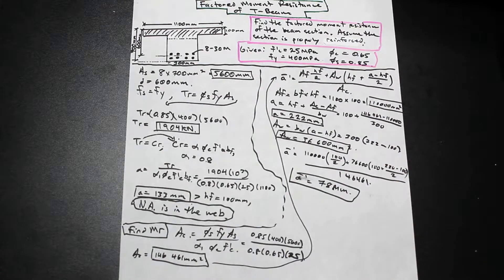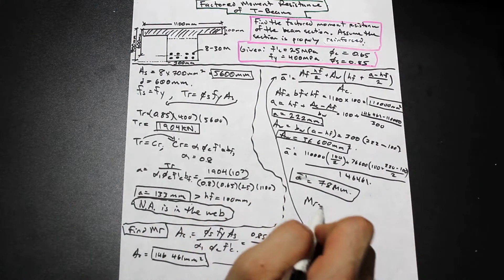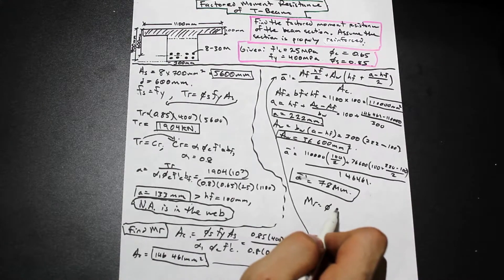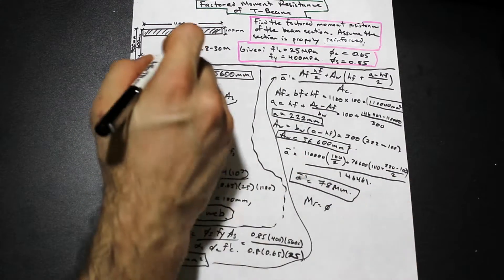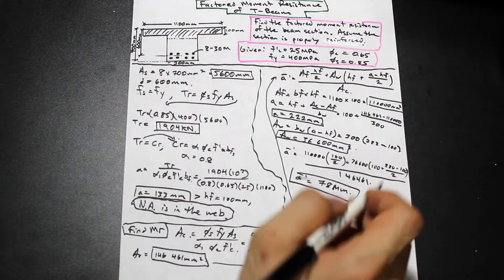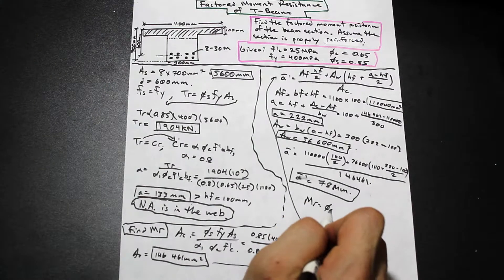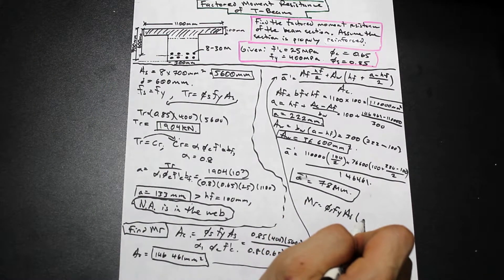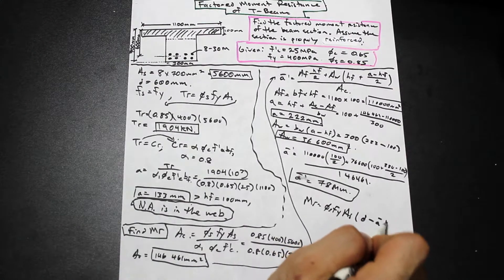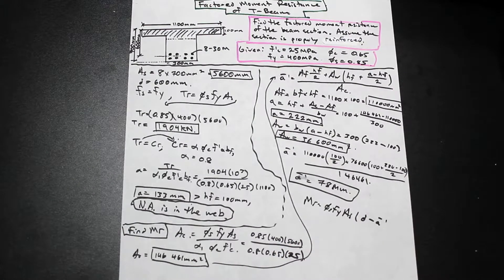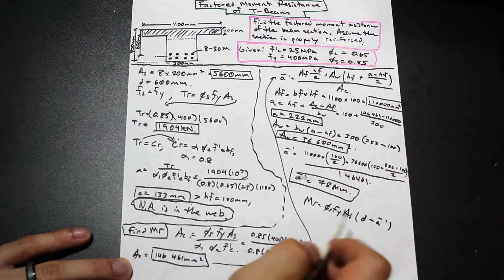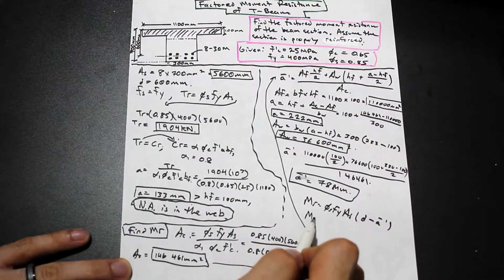Finally, we can calculate the factored moment resistance. For a T-beam with the neutral axis in the web: MR = φs · fy · As · (d − Ā') = 994 kN·m.